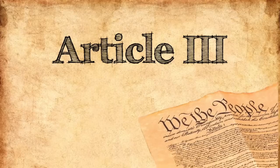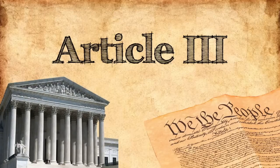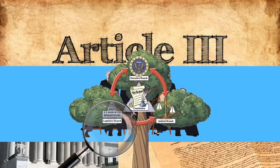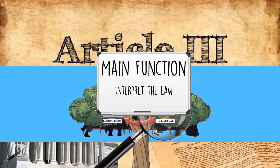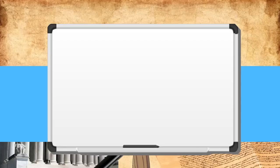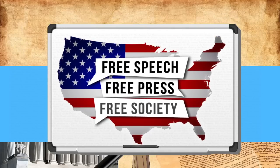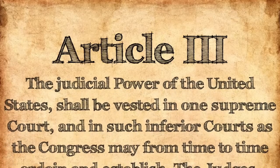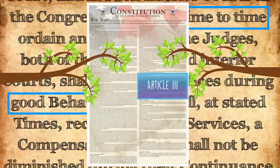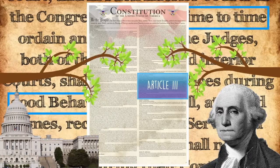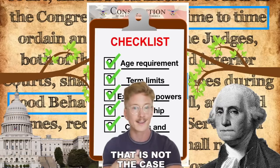Two down and one to go. Article 3 talks about the third and final branch of government: the judicial branch, probably better known to you as the Supreme Court. The main function of the Supreme Court is to interpret the law. An interpretation is trying to explain something — like a glass of water being half empty or half full. They're going to be interpreting our rights and freedoms: do we have them or not, are they limited or protected? Article 3 does not include any requirements to be a Supreme Court judge. Unlike the legislative branch and the executive branch, which all have a list of requirements, Article 3 leaves it completely blank.